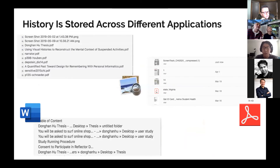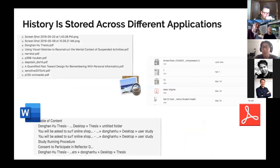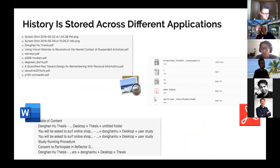Another problem is that history is stored across different applications. If I forgot which application I used to open a specific document, I may spend a lot of time reviewing each history list. Also, one person may use many applications to resume a task, so connections among documents in different applications will be lost in the per-application histories.